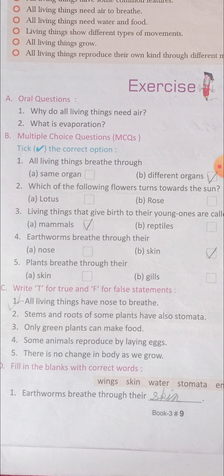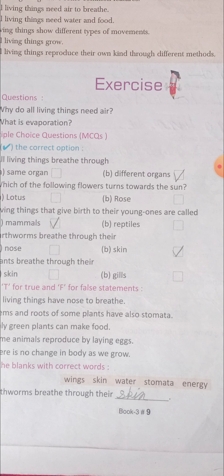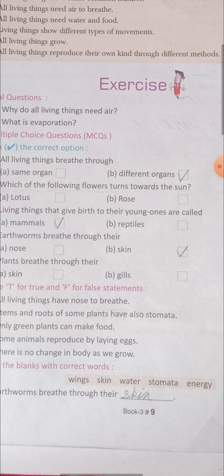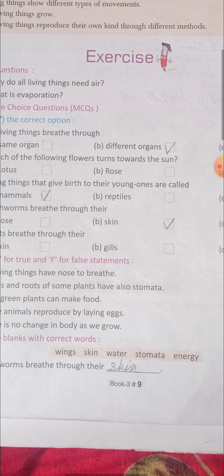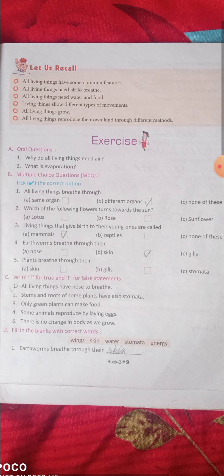Third one: living things that give birth to their young ones are called — answer is mammals. Fourth one: earthworms breathe through their — answer is skin. Fifth one: plants breathe through their — right answer is stomata.